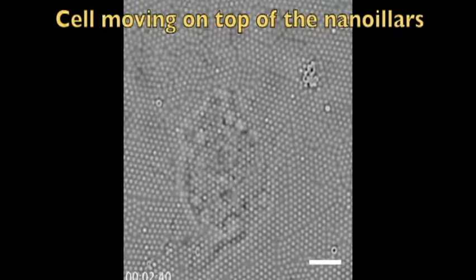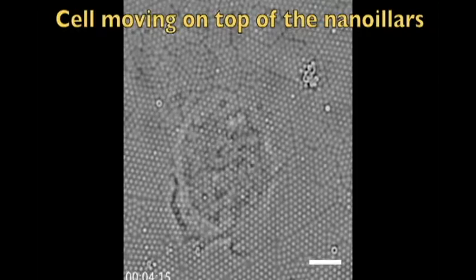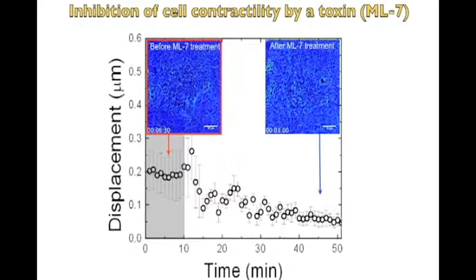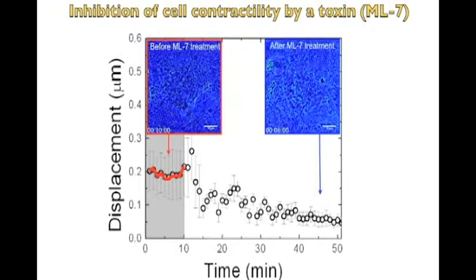This video shows how the cells move along on top of the pillars. The cells deflect the pillars one after the other - all together there are 2,000 pillars per cell. If the cell gets exposed to a toxin, you see how a living vital cell turns into a lame duck within about 10 to 15 minutes.